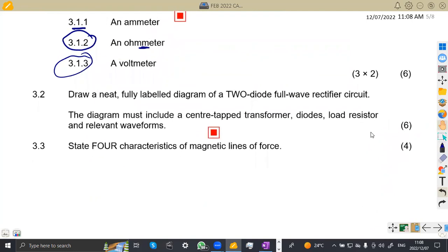On 3.2, we are asked to draw a neat, fully labeled diagram of a two-diode full-wave rectifier. Take note, this is a full-wave but having two diodes. A full-wave rectifier circuit can have two diodes, or it can have four diodes when it is a bridge rectifier. If we have two diodes, definitely it's going to have a center tap.